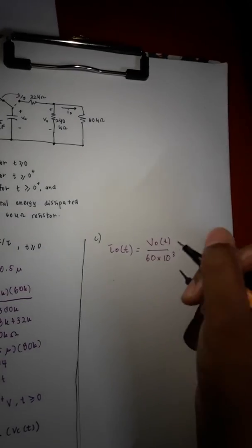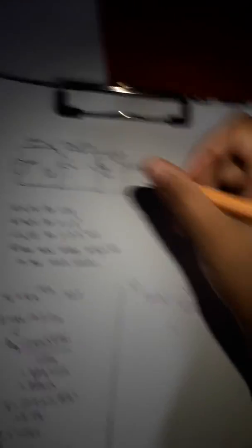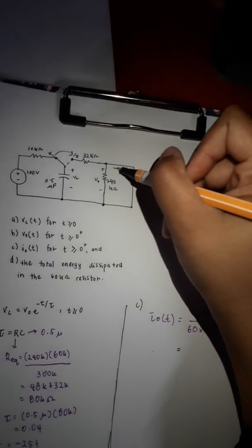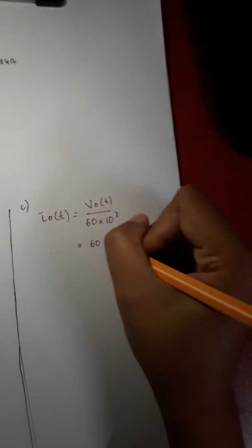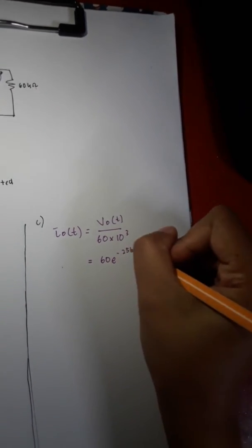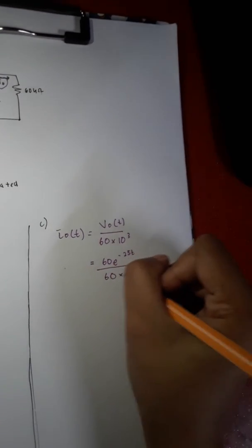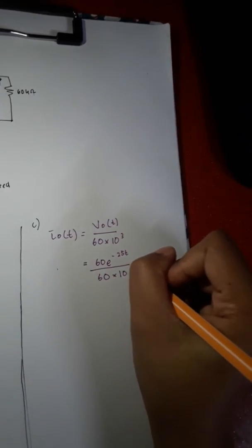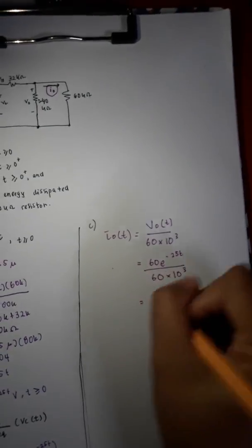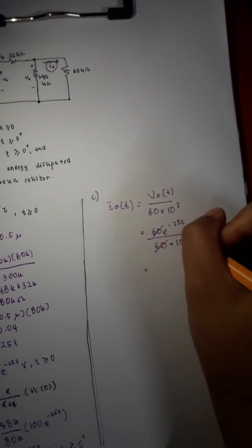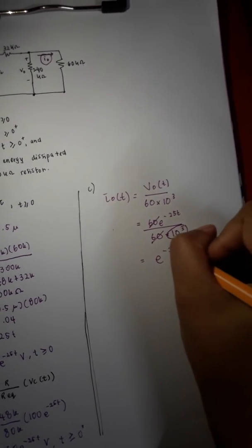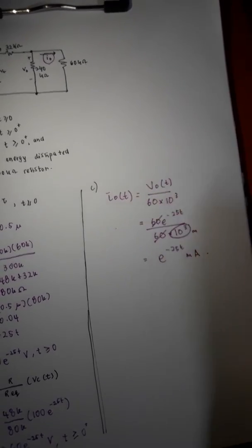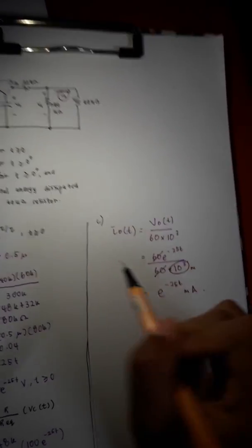So, we use this over 60 times 10 power of 3. We have to use this one because we have to find the i node here. So, the V node here is 60 exponent negative 25T over 60 times 10 power of 3. So, we cut here. And this one we transform to milli. So, exponent negative 25T milliamps. So, we get the i node.